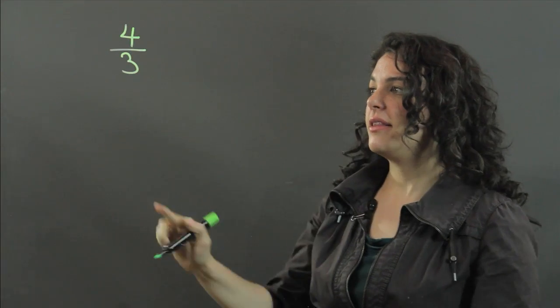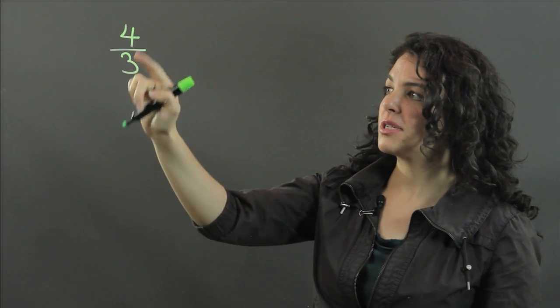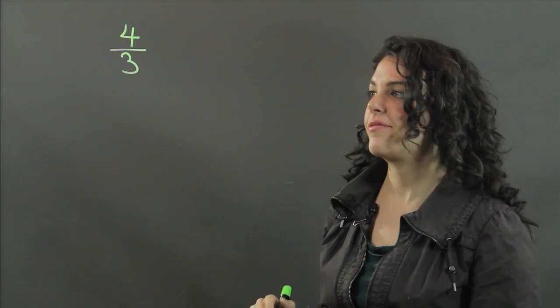Now an improper fraction is just a fraction where the numerator is bigger than the denominator. So the numerator is the number at the top, and the denominator is the number at the bottom. So 4 is bigger than 3. We have an improper fraction.